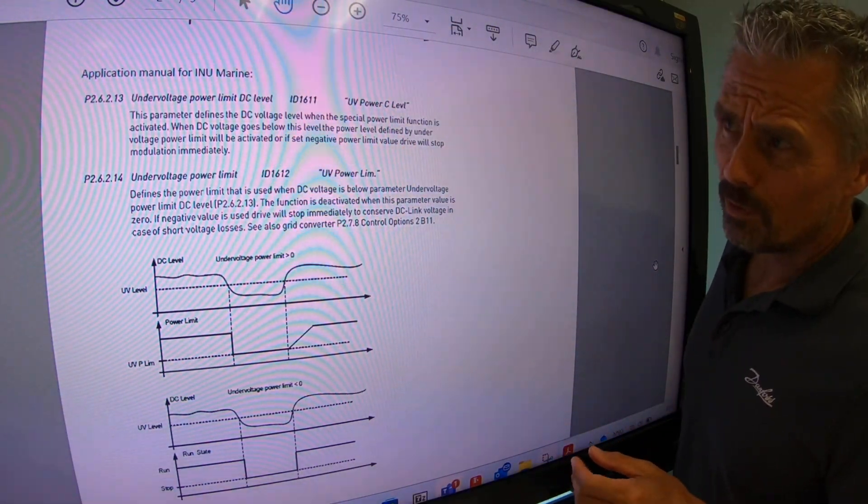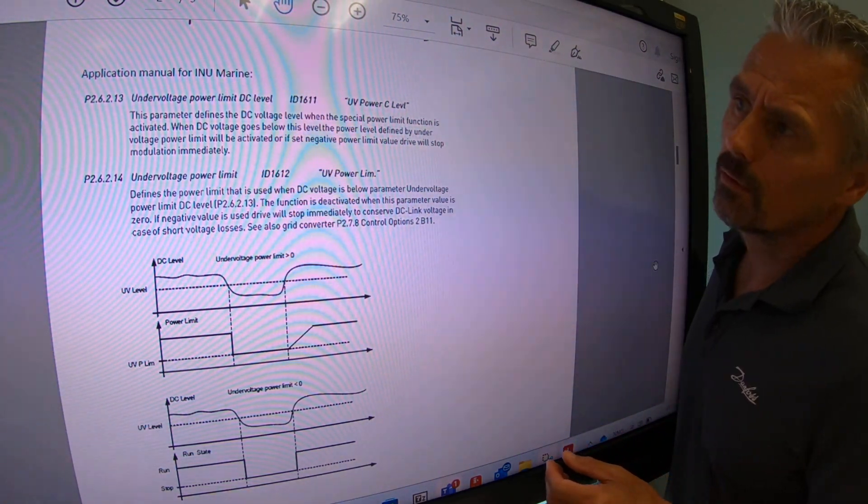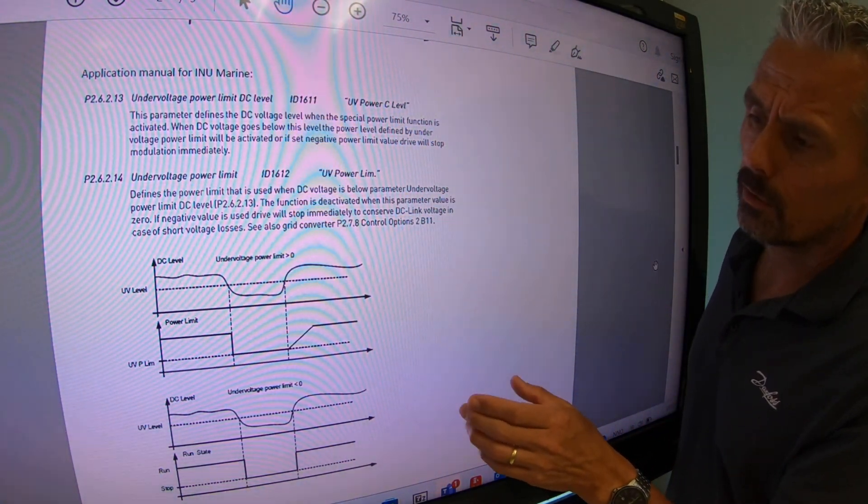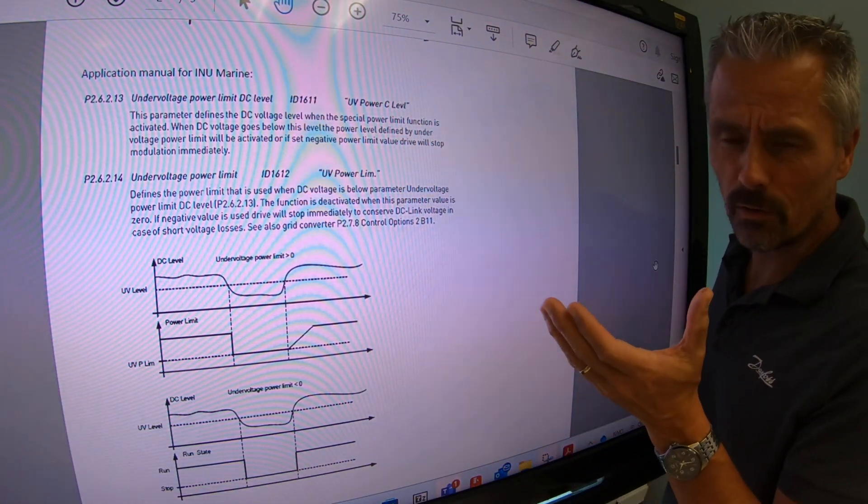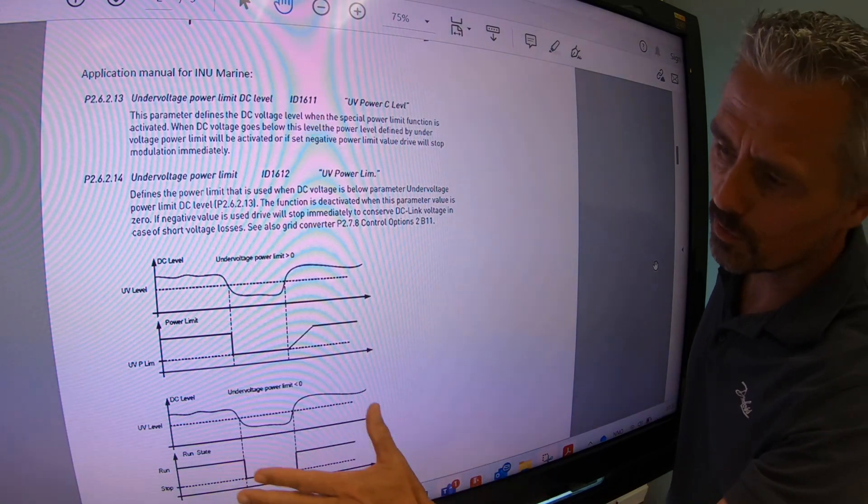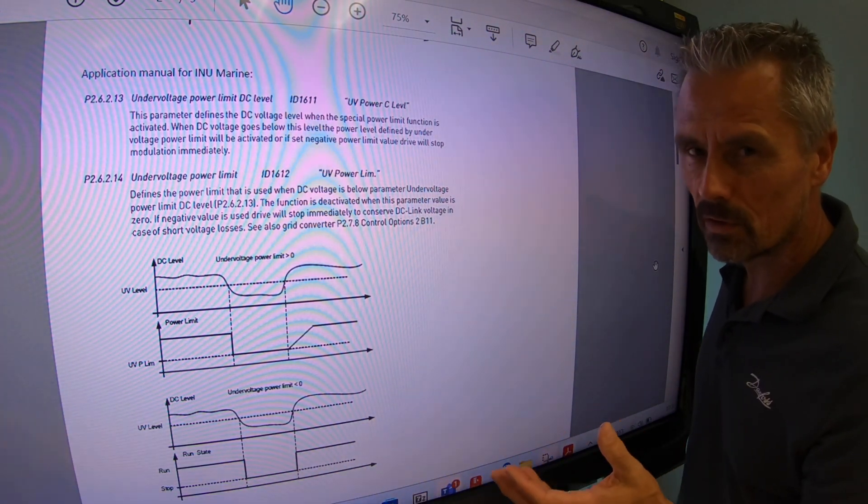For the motor inverter in the MARINA application manual, you will find a description of how the functionality is for the under-voltage power level and also the under-voltage power limit. How this works when you use it for this under-voltage ride-through.